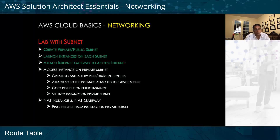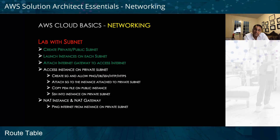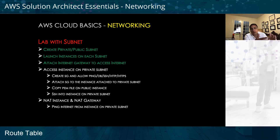These are lab exercises you can do as homework, since this webinar covers concepts at a high level — from cloud and storage to IAM and networking. Try this as a practice assignment: create a private subnet and a public subnet, launch instances on each subnet, attach an internet gateway to access the internet, access an instance on the private subnet, create a security group allowing ping, SSH, HTTP, and HTTPS protocols, attach the SG to the instance on the private subnet, and attach a network gateway instance to allow gateway access.